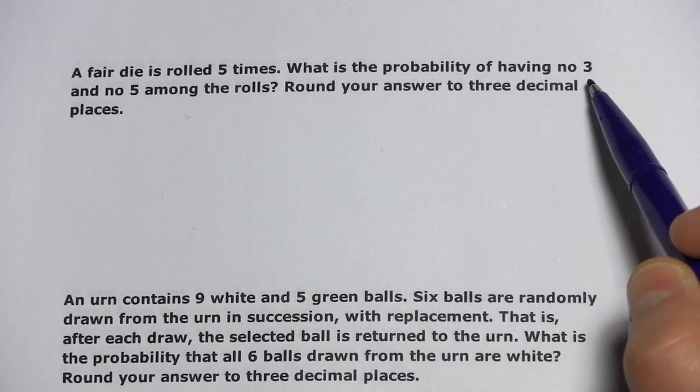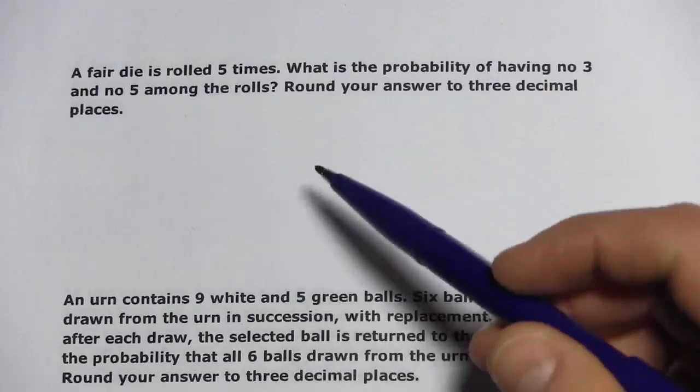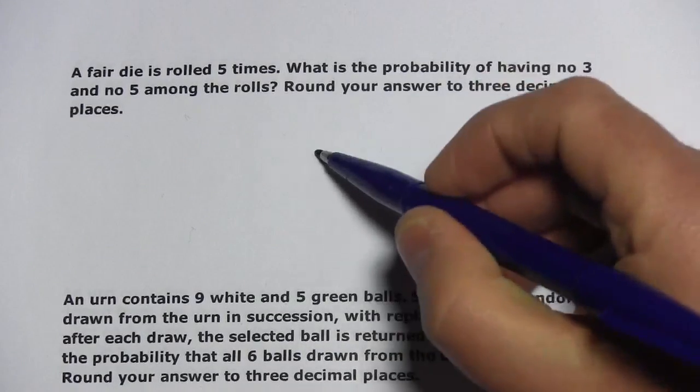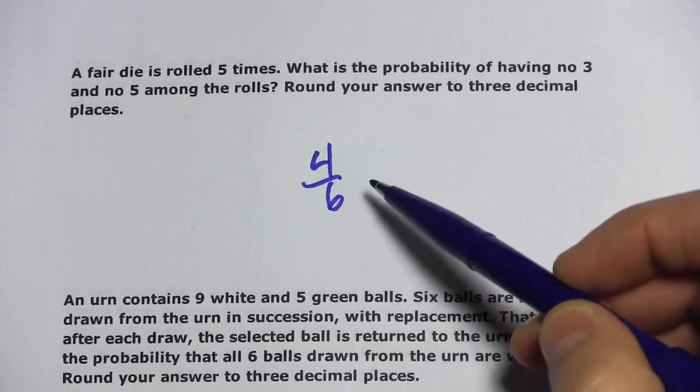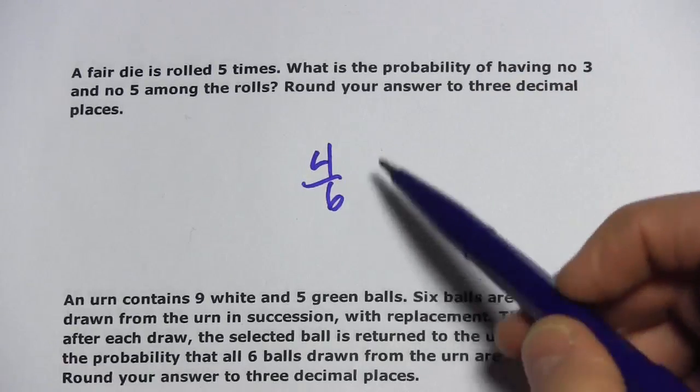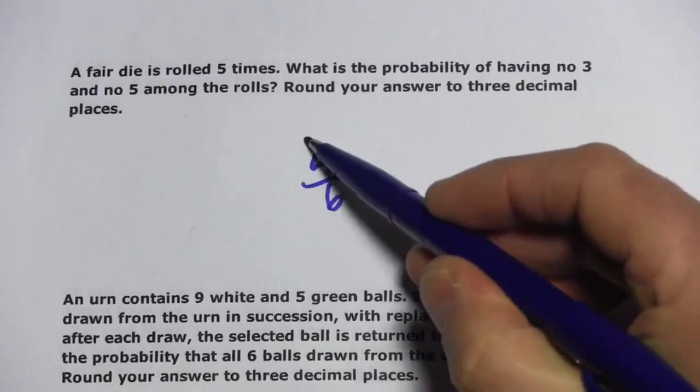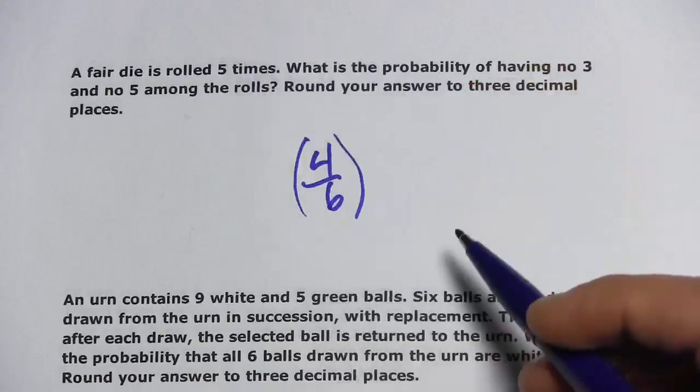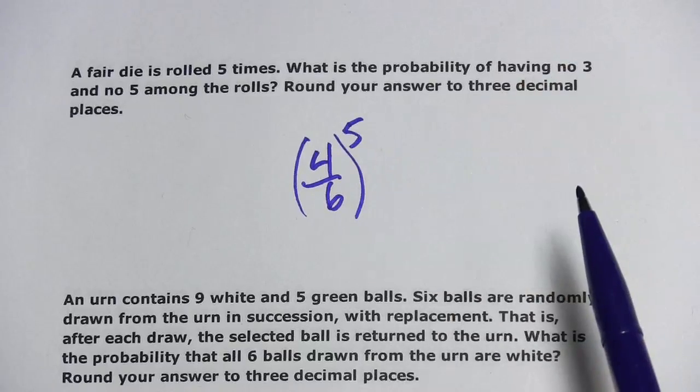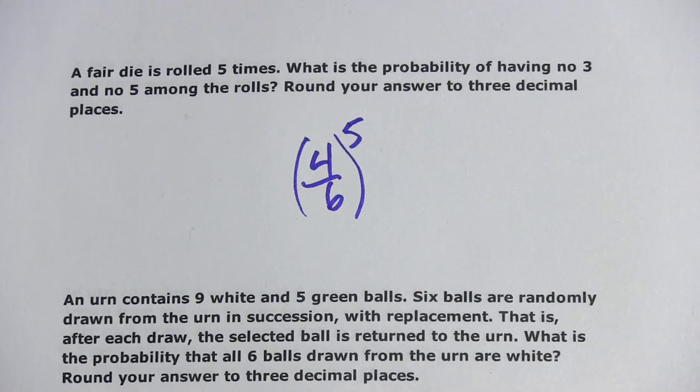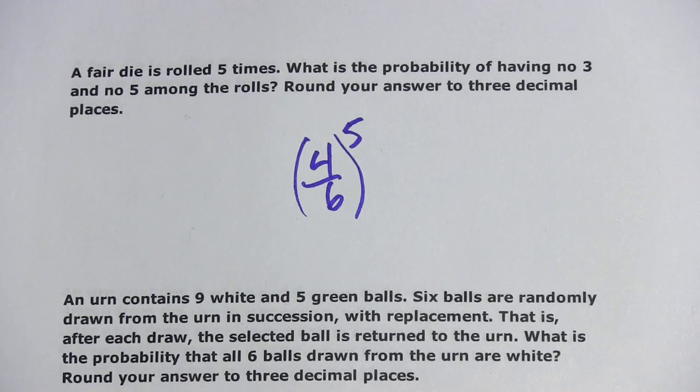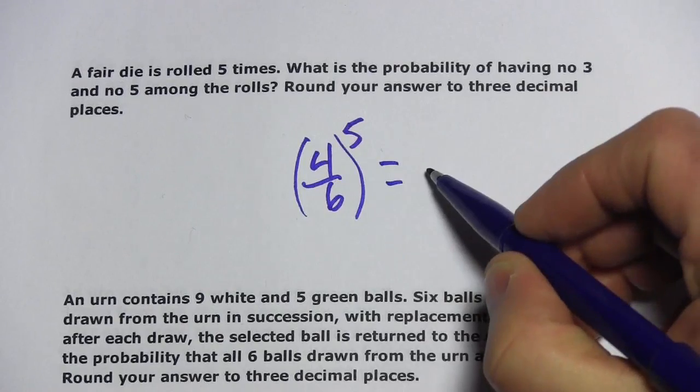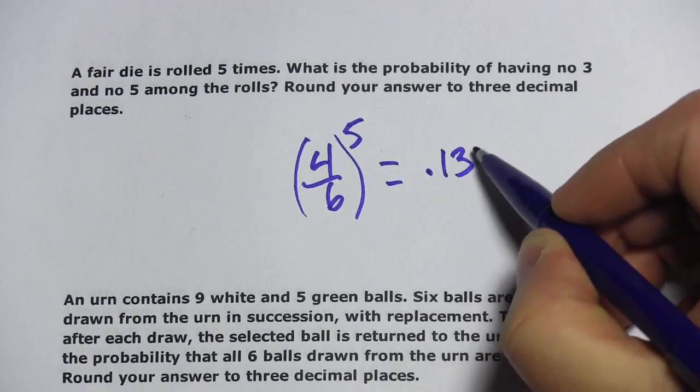The probability of having no three or no five on one roll is four out of six, because the three and the five are two sides of the die and there are four other sides. We want to do this five times in a row. That's just going to be four-sixths to the fifth, or two-thirds to the fifth. And that comes out to be about 0.132.